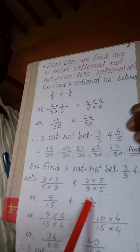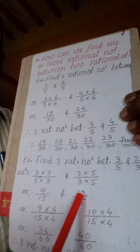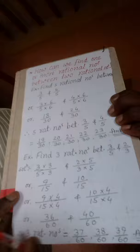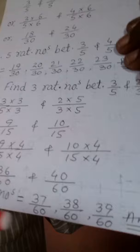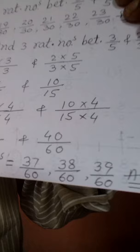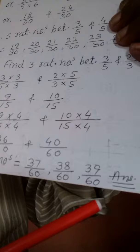तो फिर ऊपर वाला काम करिये — हमें 3 number लाने हैं, तो 4 से multiply करेंगे। तो हमने दोनों में 4 से multiply किया — number मिला 36 by 60 और दूसरा मिला 40 by 60। 36 और 40 के बीच में 37, 38, 39 — यह 3 number मिल रहे हैं। इसलिए हमारा required rational number मिल जाता है — 37 by 60, 38 by 60, 39 by 60। That's all.